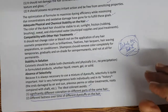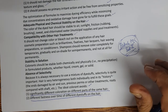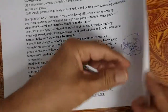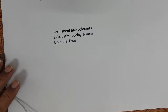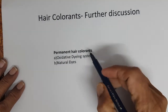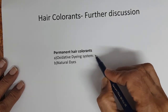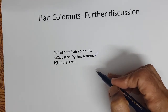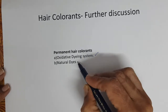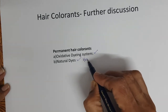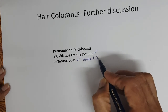These are the characteristics of an ideal hair colorant. Further discussion on hair colorants: we will discuss the oxidative dyeing system based on paraphenylenediamine, and natural dyes — henna and indigo.